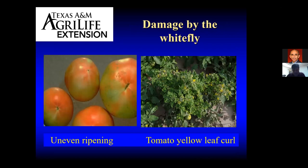Some of the damage the whitefly can do — even without carrying the virus — is significant. If you have an excessive amount of whiteflies, they can cause a physiological condition called uneven ripening. It's believed the saliva of an adult whitefly has some kind of toxin or protein — not a virus — that affects the plant physiologically and does not allow tomatoes to ripen evenly. So you can have outright damage from high whitefly numbers, or you can have damage because they're transmitting the tomato yellow leaf curl virus.